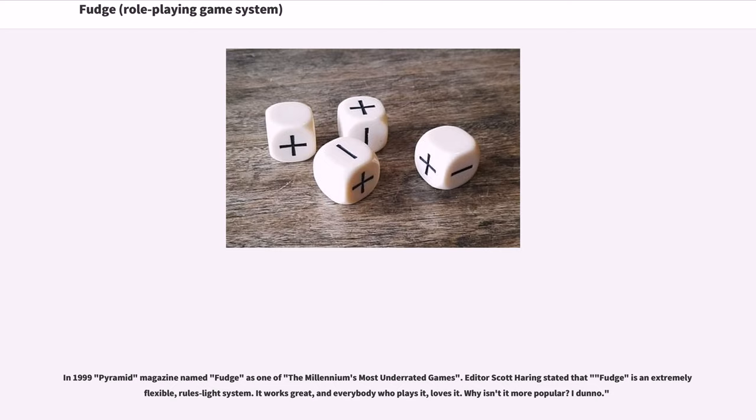In 1999, Pyramid Magazine named Fudge as one of the millennium's most underrated games. Editor Scott Herring stated that Fudge is an extremely flexible, rules-light system. It works great, and everybody who plays it loves it. Why isn't it more popular? I don't know.